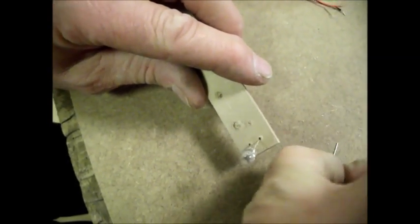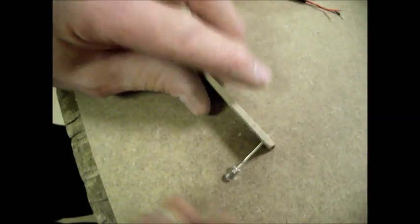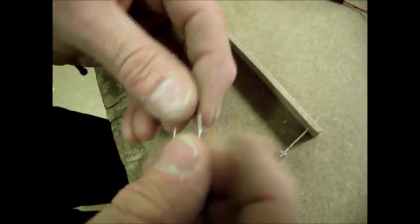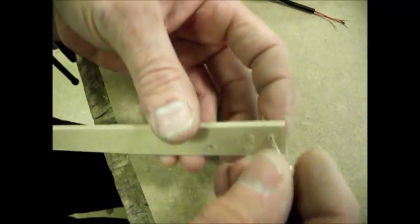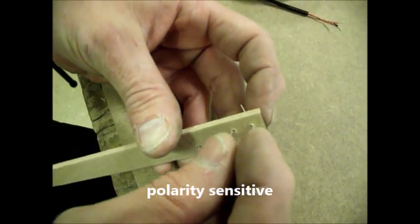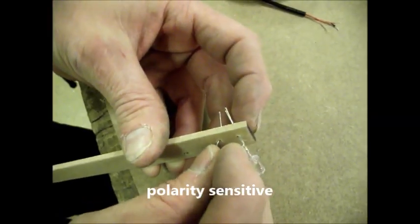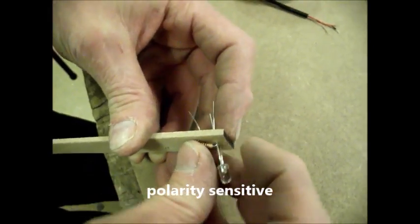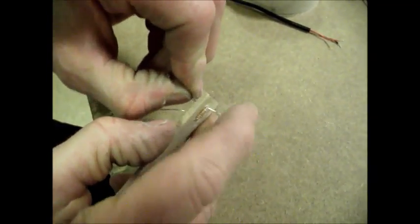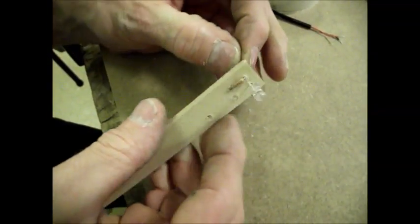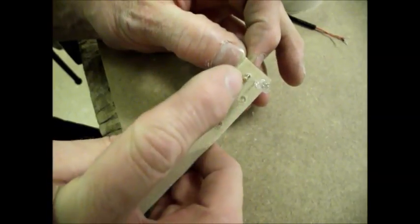Then take your resistor and bend the legs down like that. It doesn't matter which way around the resistor goes, but the LED is a polarity sensitive component. It does matter which way around it goes in the circuit, otherwise it won't work. Push the resistor through those two holes. Now the long leg can easily be identified now because that's the side that you've got against the resistor. So that's the long leg.